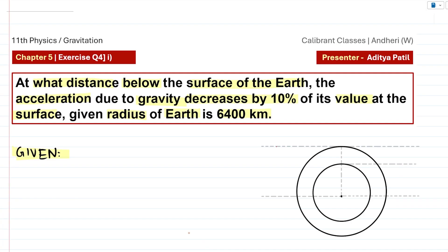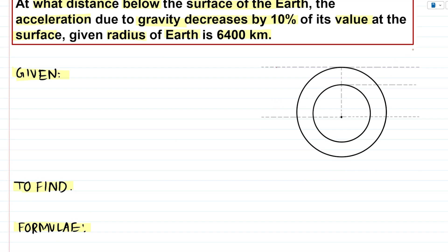Let us understand this with our diagram. We measure the acceleration due to gravity at the surface and represent it using the symbol small g. If this is the center of the earth and this is the surface of the earth, then the distance between these two points is equivalent to the radius of the earth, represented using the symbol Re.